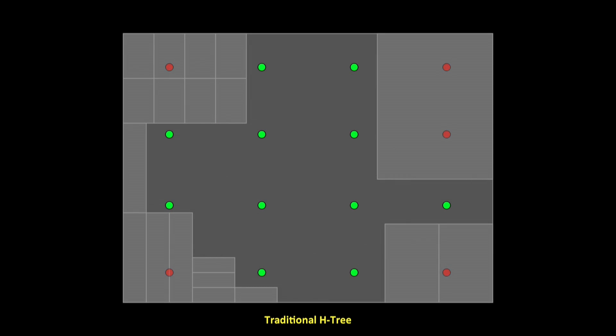The problem with a naive H-tree implementation is that you have to have a power-of-two number of sinks, it has to have an unblocked rectangular region to place it in, it doesn't consider physical hierarchy, and it doesn't consider module boundaries. So the holy grail would be to have some way of delivering the same benefits of an H-tree on any floor plan.